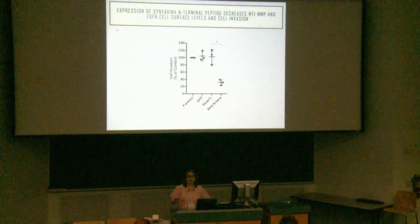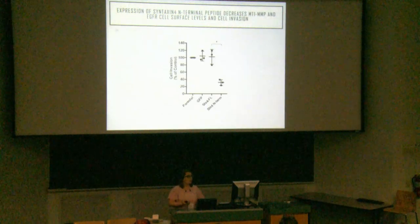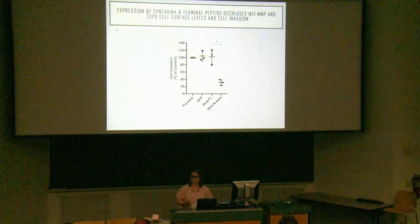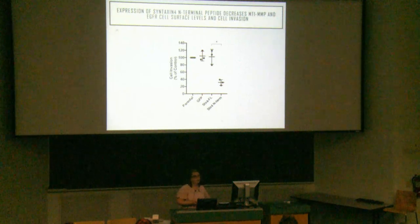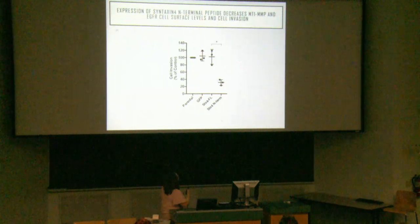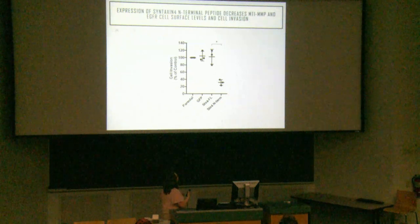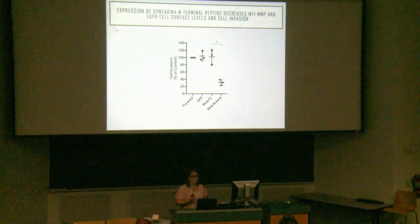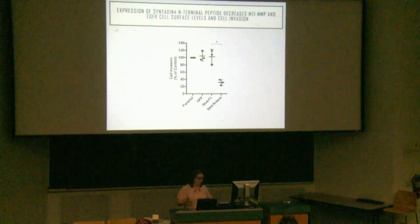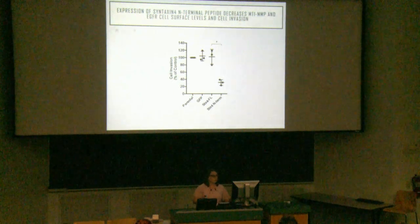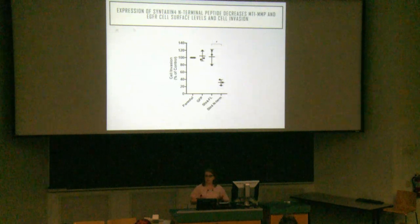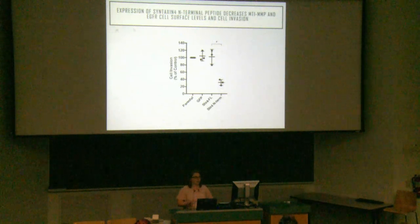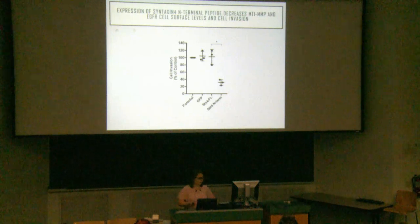Since MT1-MMP and EGFR are decreased at the cell surface, we tested whether this would affect cell invasion using a Transwell Matrigel Boyden assay. Cells expressing the Syntaxin-4 N-terminal peptide had a decreased ability to invade through the Matrigel. Therefore, MUNC18C function is required not only for trafficking of EGFR and MT1-MMP to the cell surface, but also for cellular invasion.